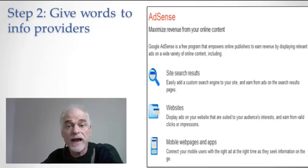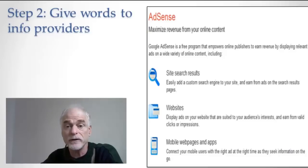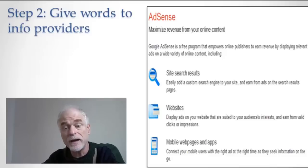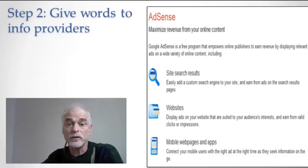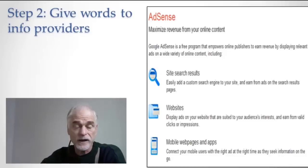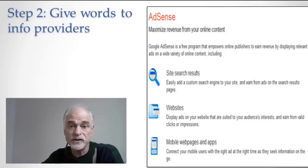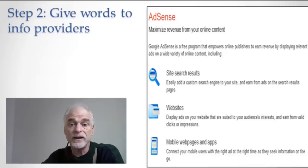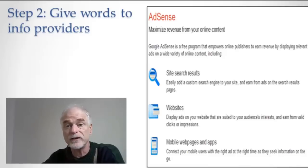And Google will give me a bunch of ads that, as far as it can see, are as well targeted towards the people who are coming to my page as possible. And I get little ads. Technically, the way it works is I drop a little piece of code onto my HTML pages. That little piece of code contacts Google and gets the latest ads. And those ads come up as little pictures or little text ads.